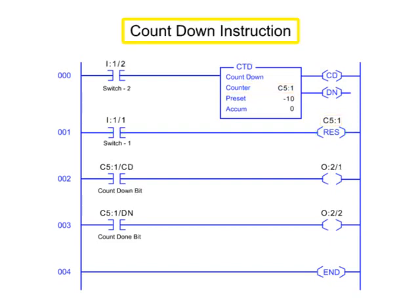The countdown instruction or CTD works the opposite way of the CTU by counting true to false rung transitions. When rung conditions for a CTD instruction have made a true to false transition, the countdown enable bit is energized and the accumulated value is decremented by one count.